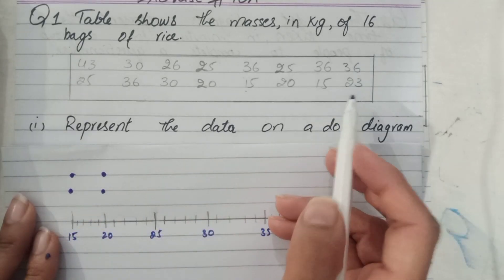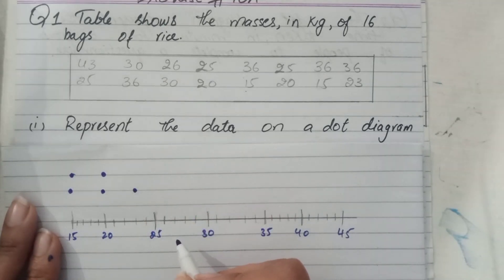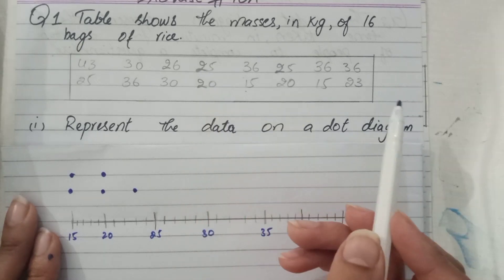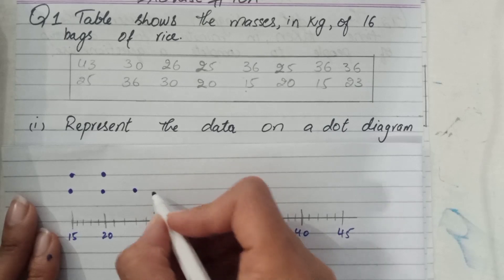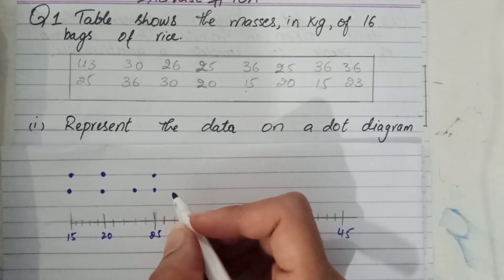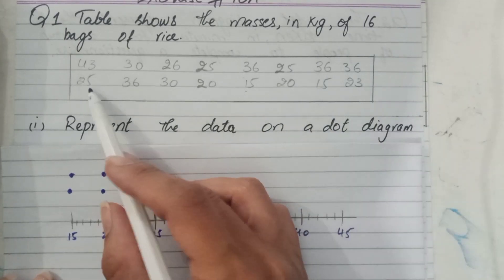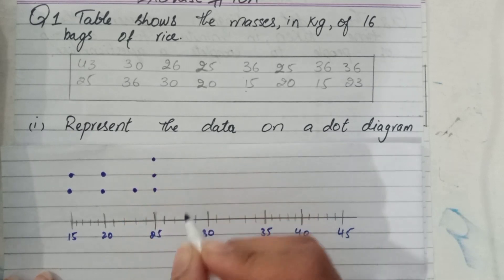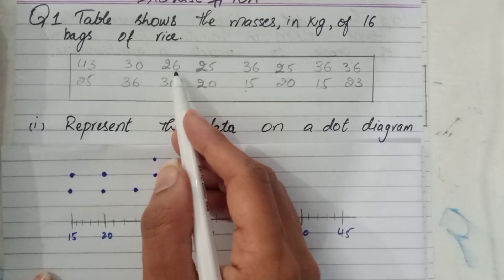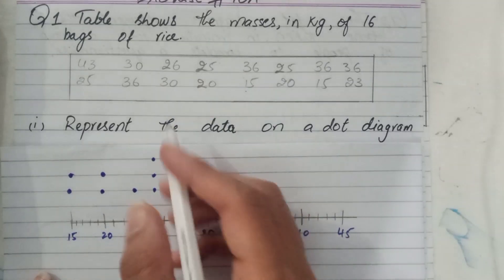Then 23 — there is only one 23. And 25 — there are three values of 25. After 25, there is 26 — one digit is 26.